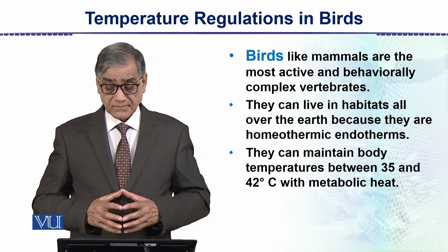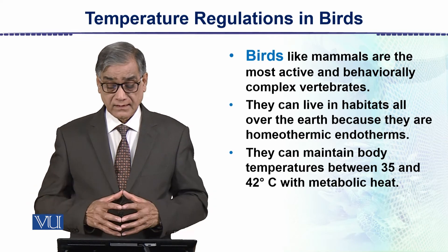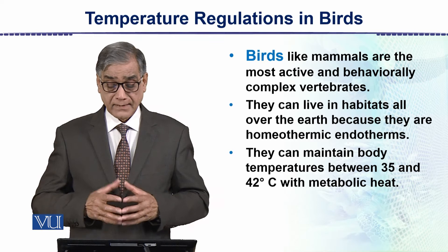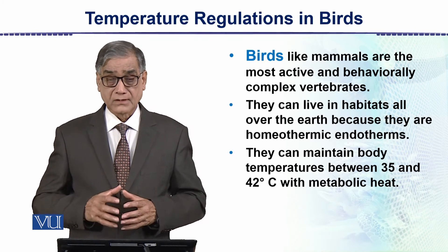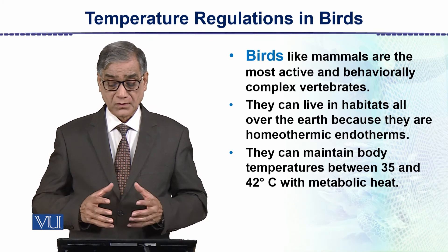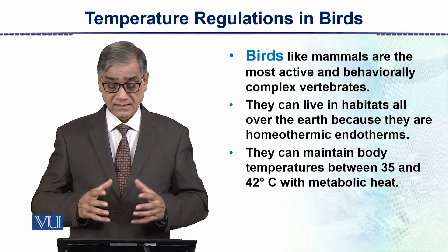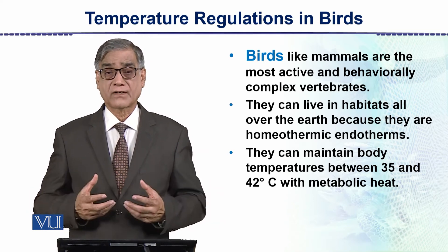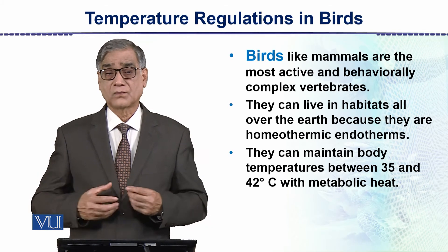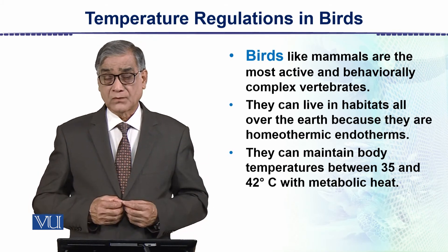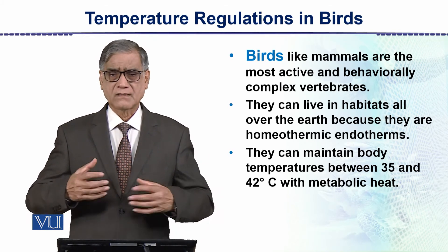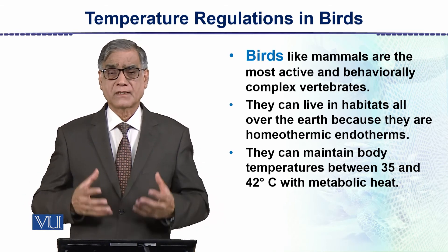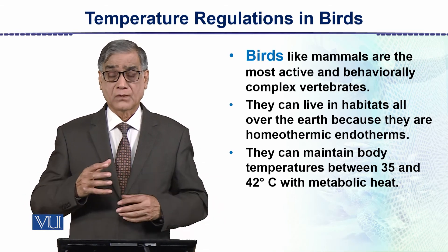These are endotherms. They can maintain their body temperature between 35 to 42 degrees Celsius using metabolic heat. This is all achieved through metabolism, and the metabolic rate adjusts accordingly to maintain the body temperature.